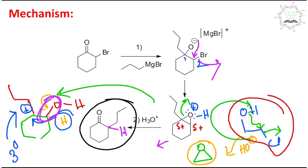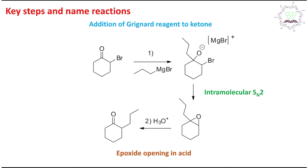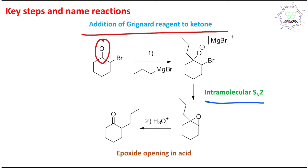There is an alternative pathway where alpha-halocarbonyls are very good for SN2, so the nucleophile could attack there and ultimately give the same product, but the pathway I explained is more logical. In key steps: the first step is addition of the Grignard reagent to the carbonyl group; the second step is intramolecular SN2 for epoxide formation; and the third step is epoxide opening in the presence of acid. I have already discussed many lectures on Grignard, SN2, and epoxide opening in acid and neutral medium.